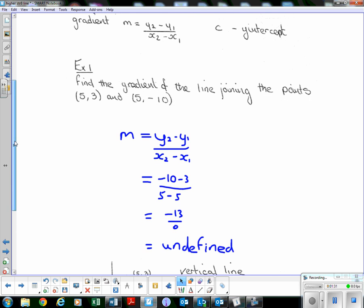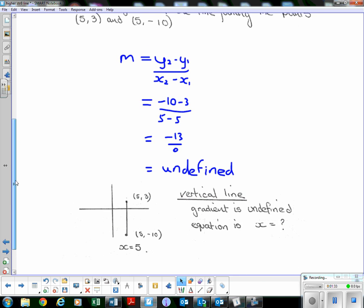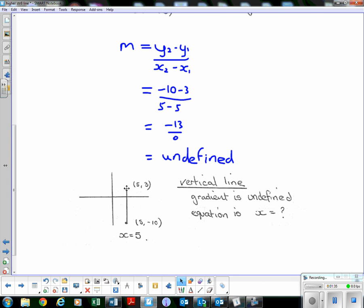So let's just have a think about what that means. So if we draw it, (5, 3) will be here, (5, -10) will be down here. We're just going to get a vertical line. You can see there that the x coordinate does not change but the y coordinate does. We just have a vertical line. So if we have a vertical line, the gradient is undefined, i.e., we're dividing by zero.